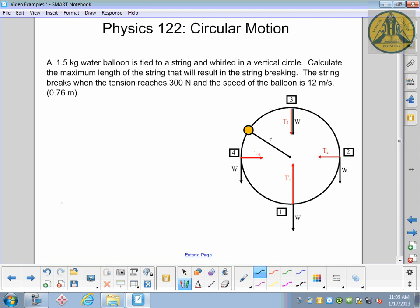So one thing to remember is if a string is going to break in a vertical circle, its maximum tension is at the bottom. In order to keep going in the circle, you have to have a centripetal force. The centripetal force is directed towards the center of the circle. At the bottom of that vertical circle,